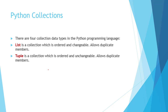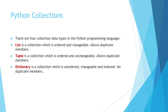Tuple is a collection which is ordered and unchangeable. Tuple also allows duplicate values, but we cannot change the value in the tuple. Next is dictionary. Dictionary is a collection which is unordered, changeable, and indexed. No duplicate members are allowed in the dictionary.